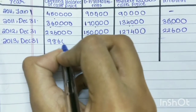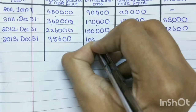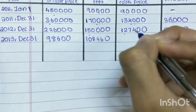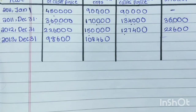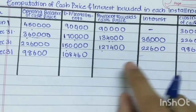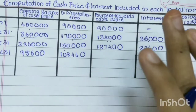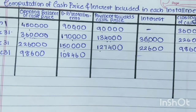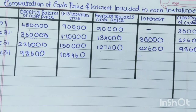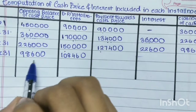The closing balance for year 2 is 98,600. For year 3, the installment is 1,84,460. We apply 10% to calculate the interest amount. The question is related — number three depends on number one.